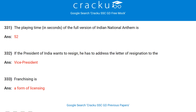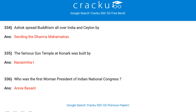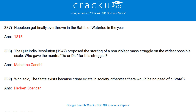If the President of India wants to resign, he has to address the letter of resignation to the Vice President. Franchising is a form of licensing. Ashoka spread Buddhism all over India and Ceylon by sending the Dhamma Mahamattas. The famous Sun Temple at Konark was built by Narasimha I. Who was the first woman president of the Indian National Congress? Annie Besant. Napoleon was finally overthrown at the Battle of Waterloo in 1815.